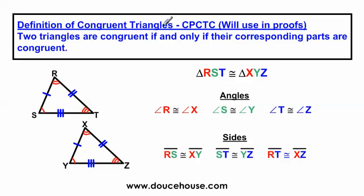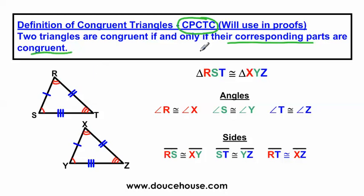Definition of congruent triangles: if you are doing proofs in geometry, two triangles are congruent if and only if their corresponding parts are congruent. You can use the CPCTC rule to indicate that the triangles are congruent — writing CPCTC on a proof means that two triangles are congruent because their corresponding parts are congruent.